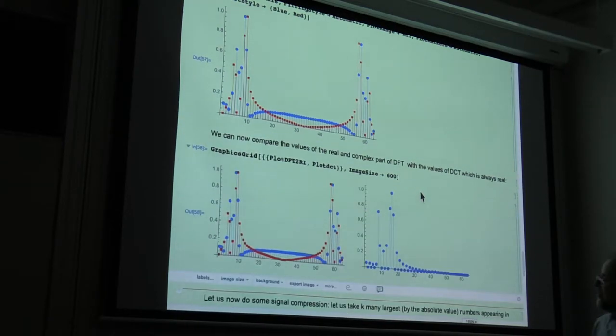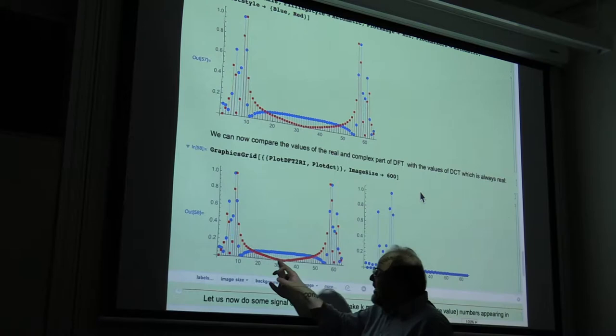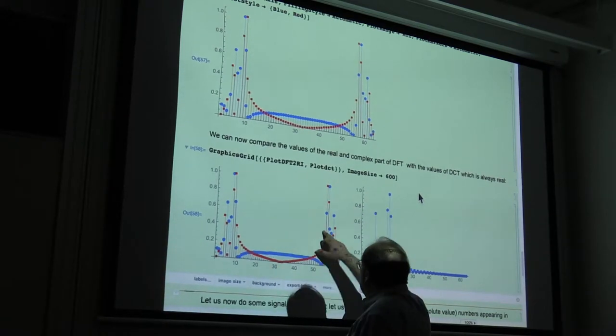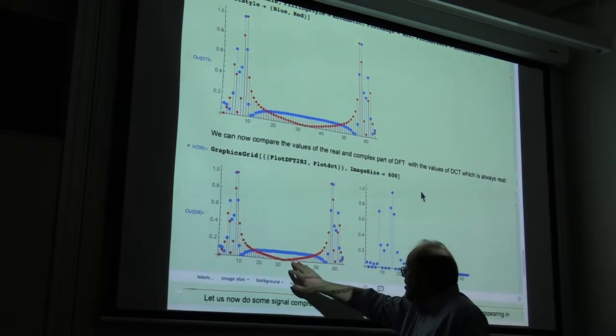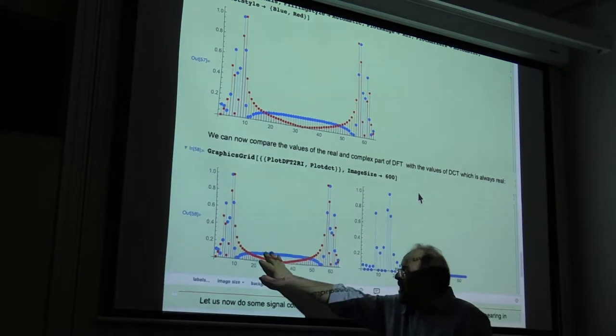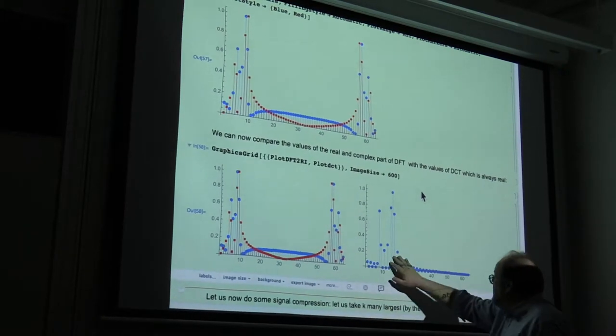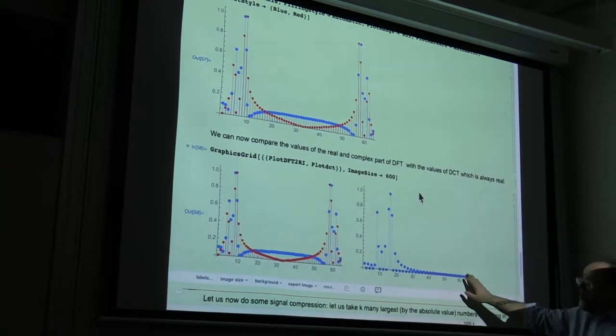Here, the two clouds next to each other. These are the real and imaginary parts of the discrete Fourier transform. This is the discrete cosine transform.